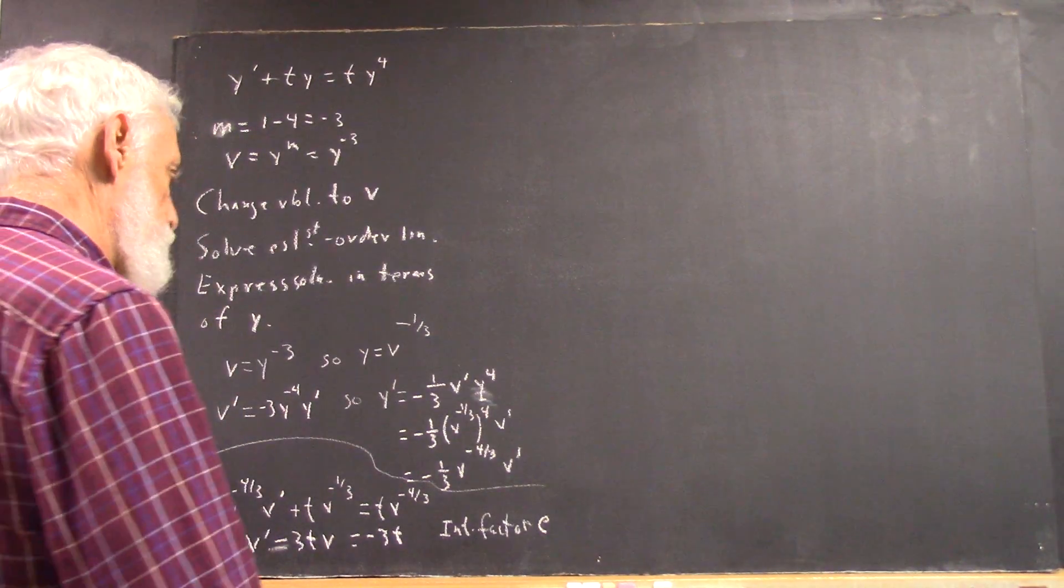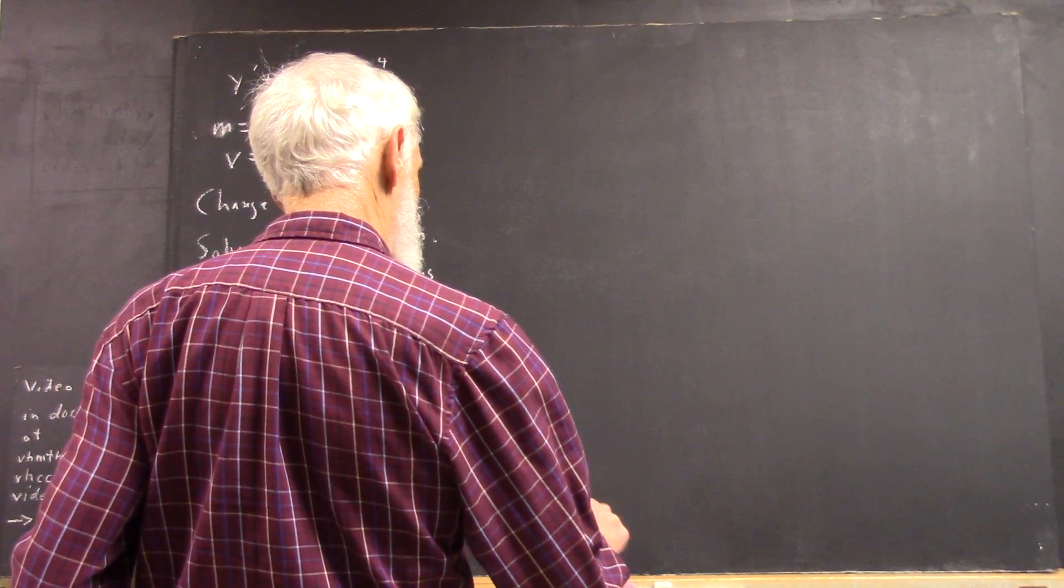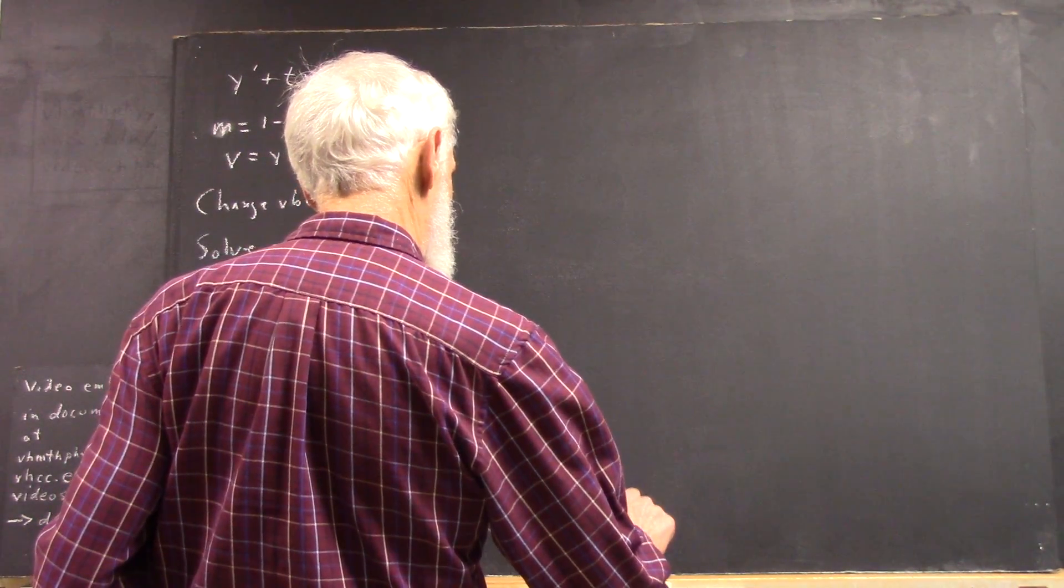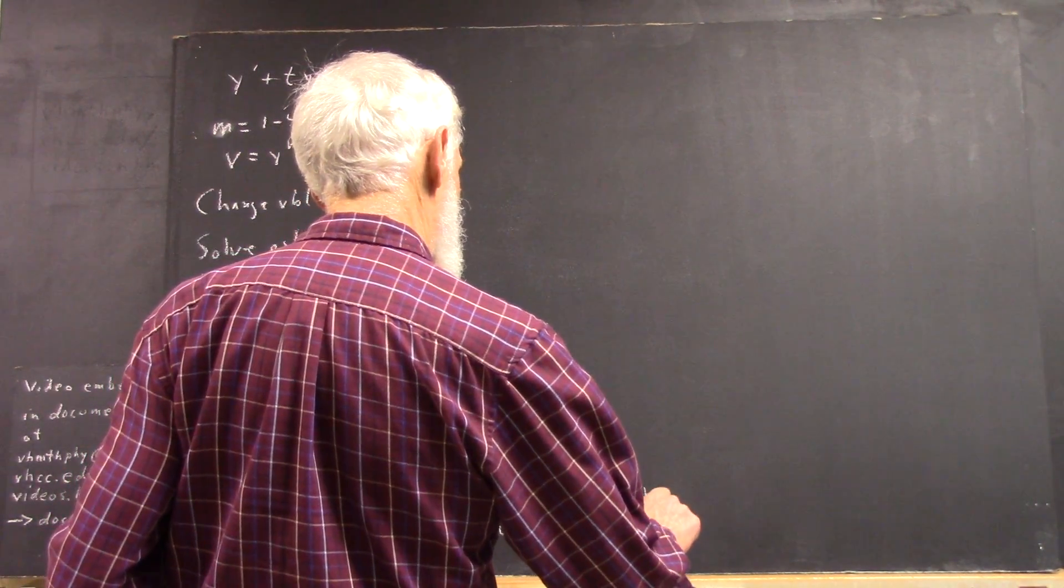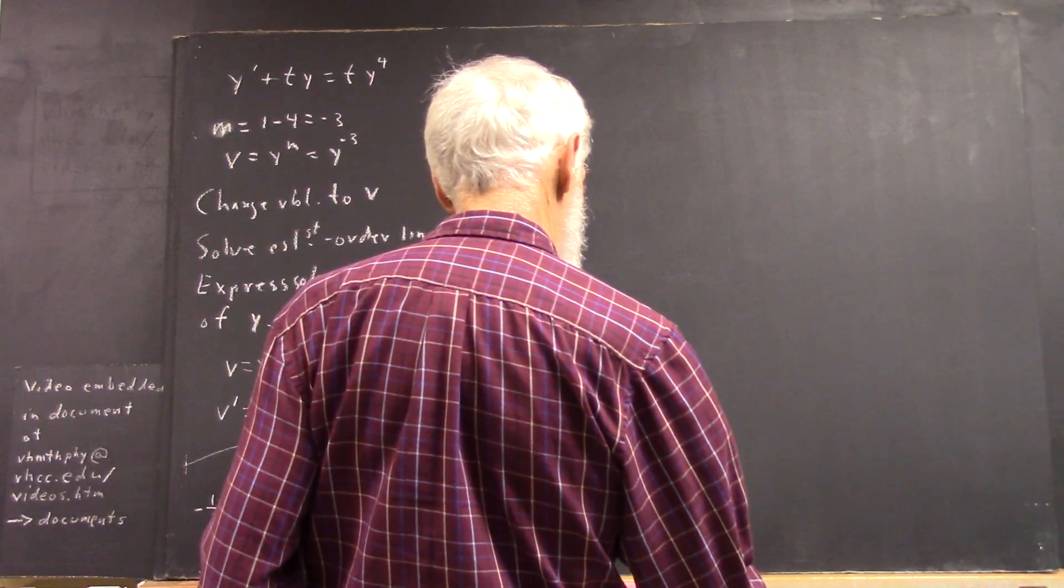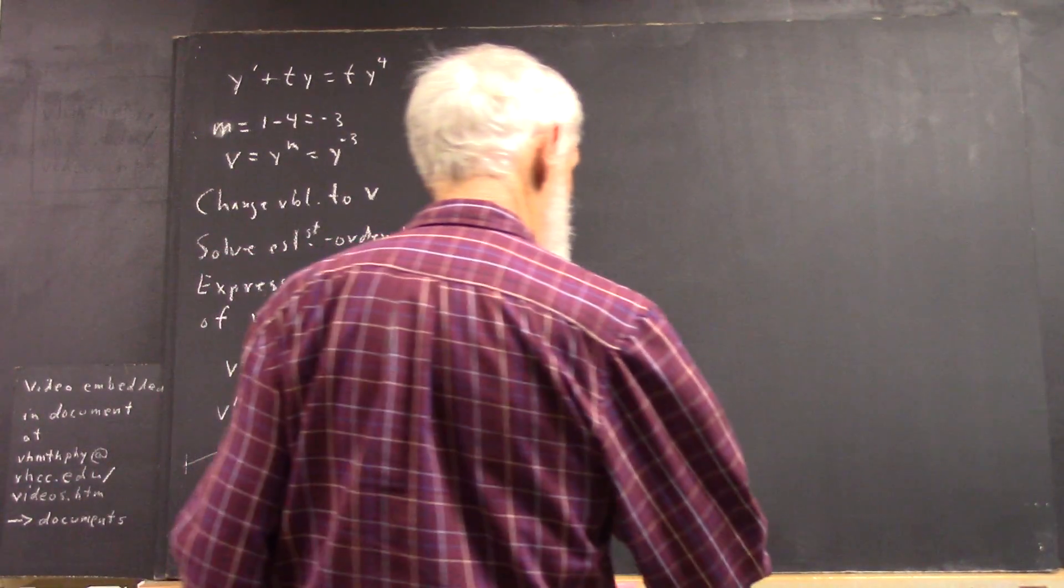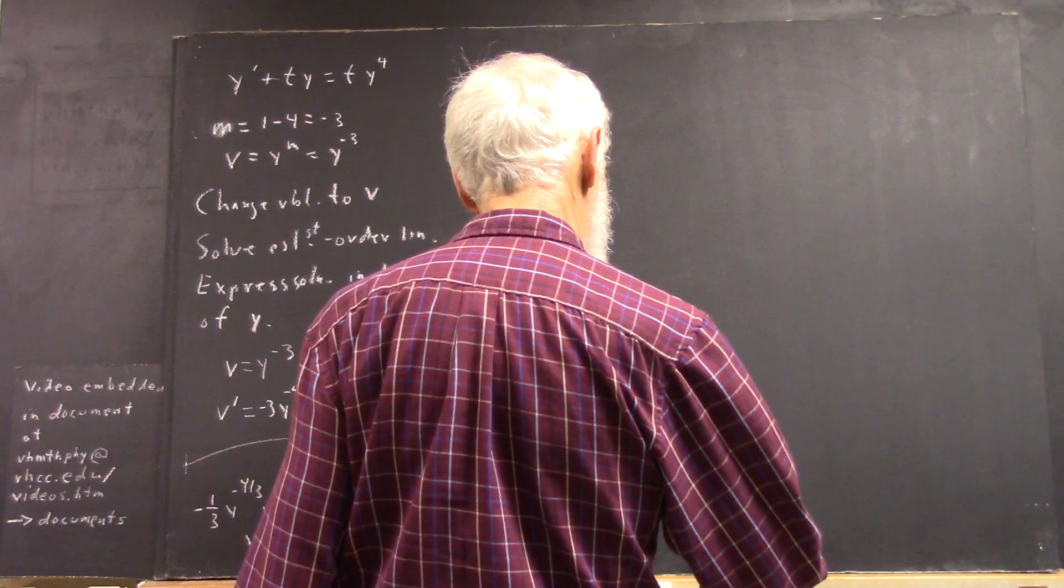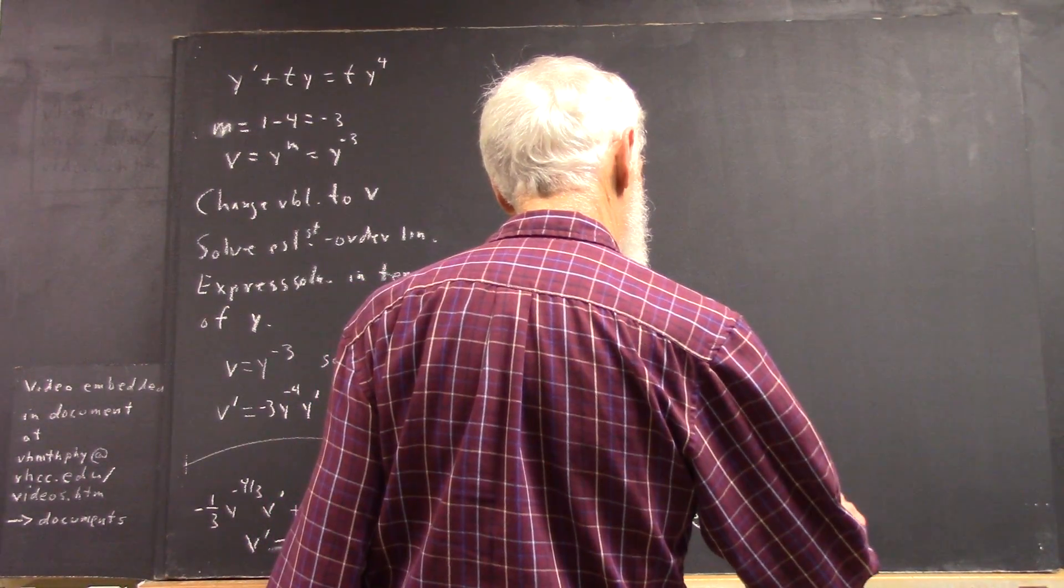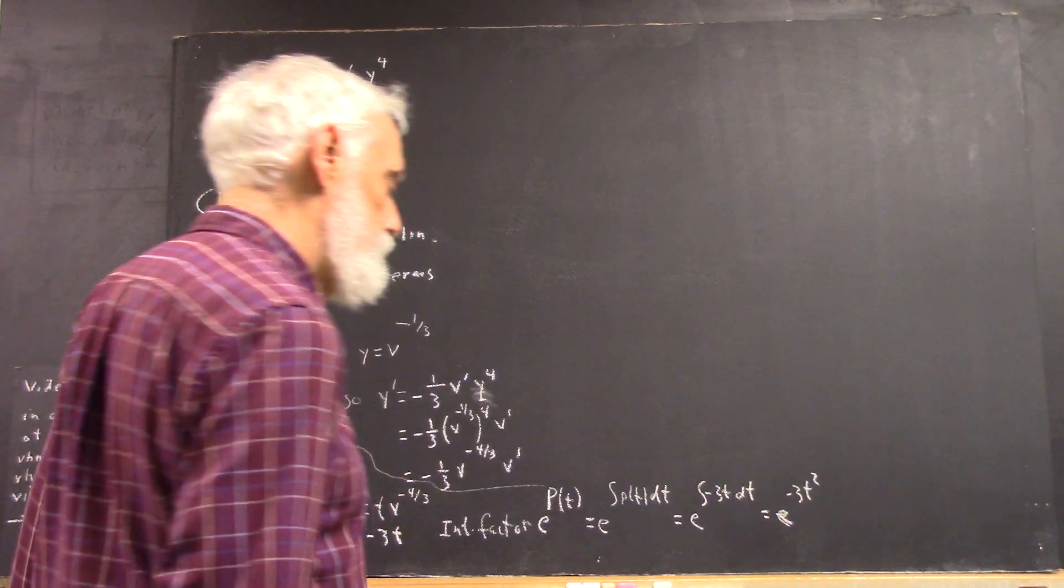the integrating factor is e to the integral of little p of t dt, which is e to the integral of negative three t. And that's e to the negative three t squared over two.